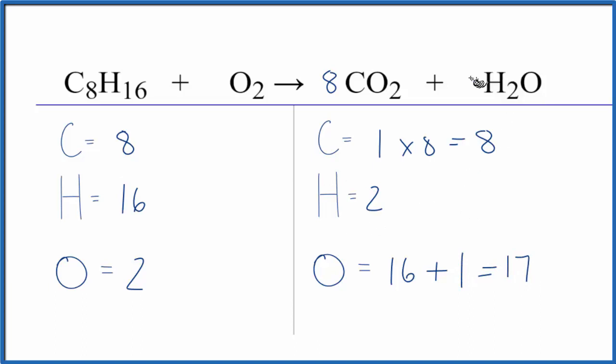Let's fix the hydrogens. We could put an 8 in front of the H2O. 2 times 8, that gives us 16. So the hydrogens are balanced. Update the oxygens. We have 8 times 2. That's 16, plus 8 times 1. That's 8. So now we have 24 oxygen atoms.